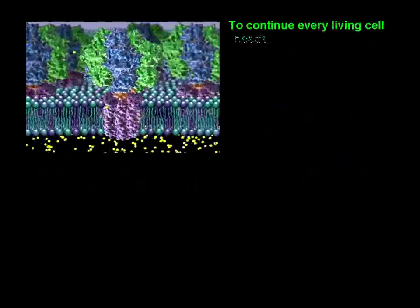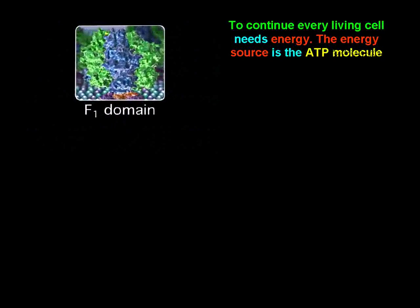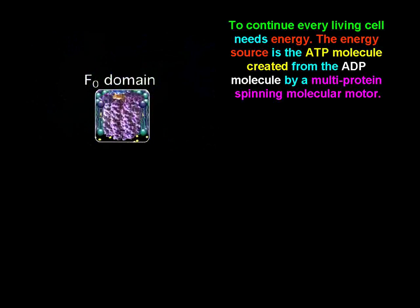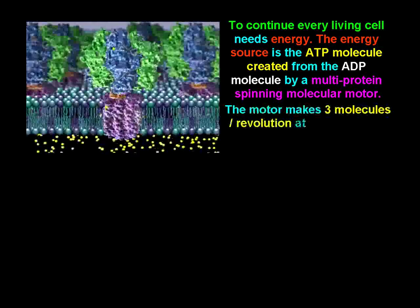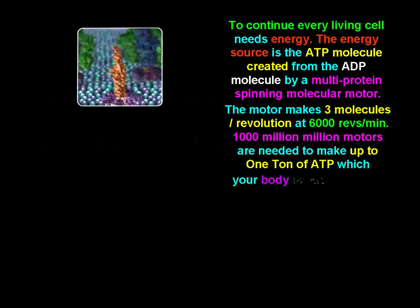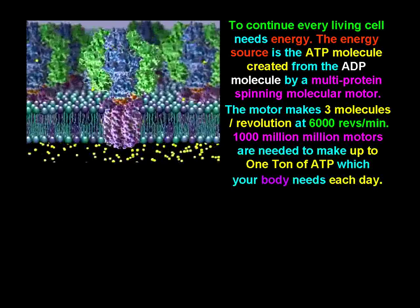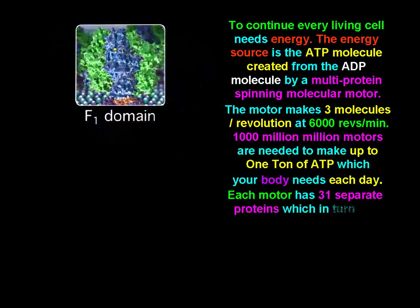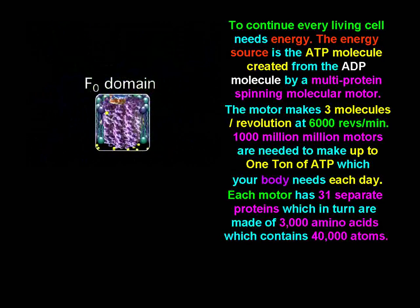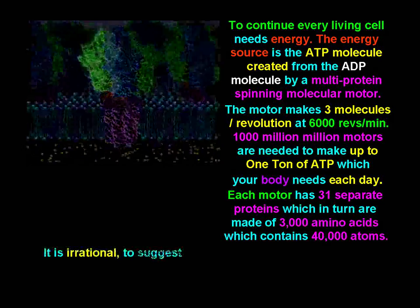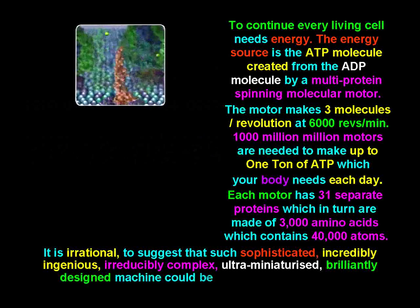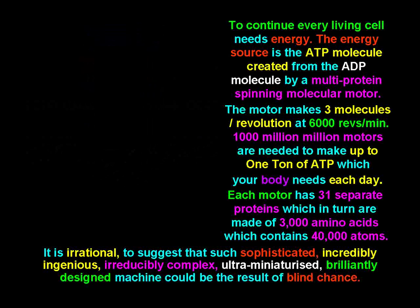Every living cell needs energy. The energy source is the ATP molecule, created by a multi-protein spinning molecular motor. The motor makes 3 molecules per revolution at 6,000 revolutions per minute. 1,000 million million motors are needed to make up to 1 ton of ATP, which your body needs each day. Each motor has 31 separate proteins, which in turn are made of 3,000 amino acids containing 40,000 atoms. It is irrational to suggest that such a sophisticated, incredibly ingenious, irreducibly complex, ultra-miniaturized, brilliantly designed machine could be the result of chance.